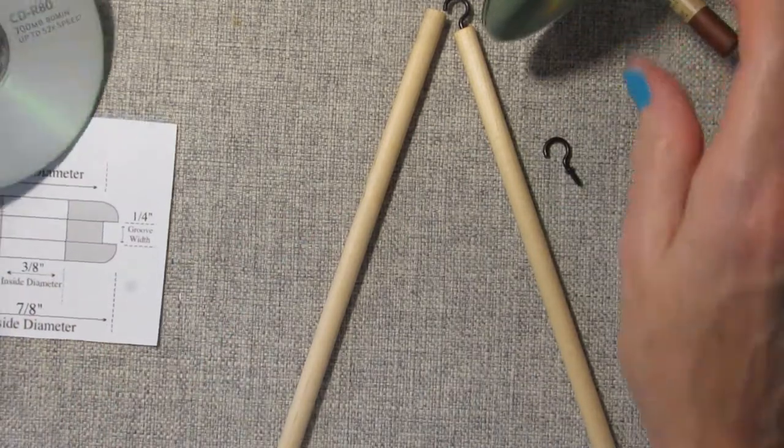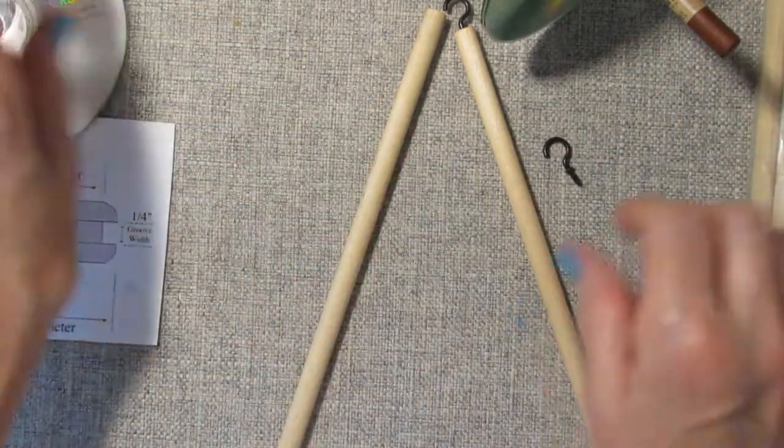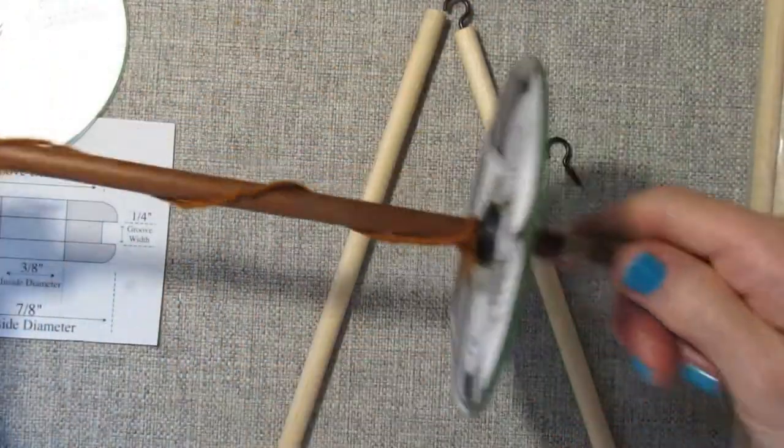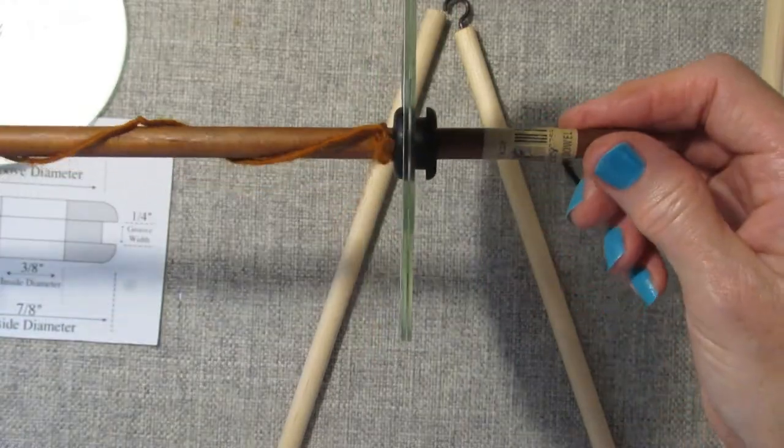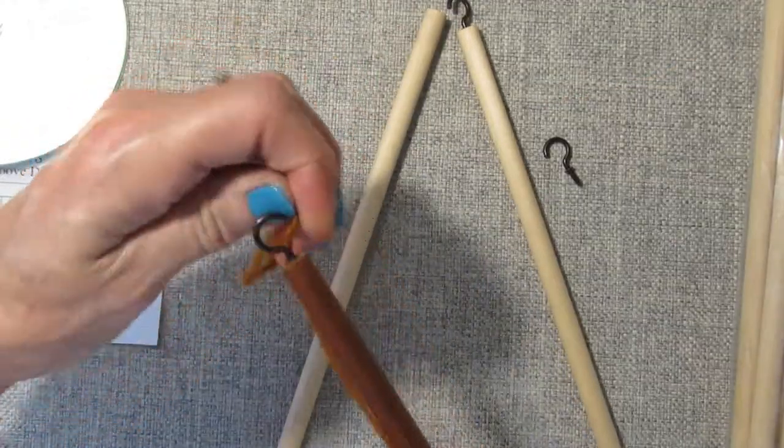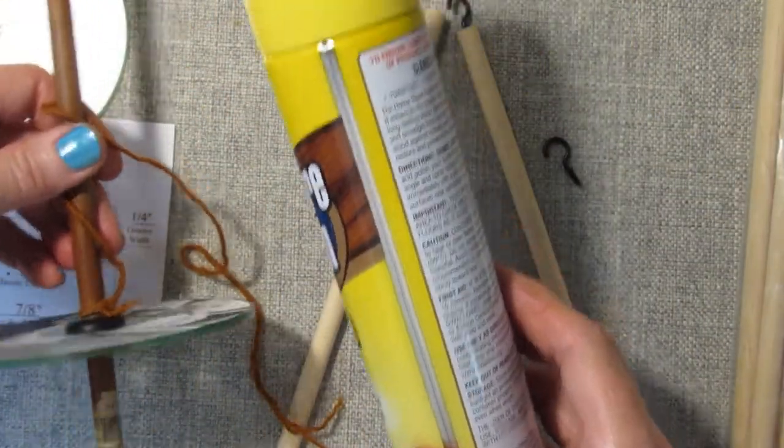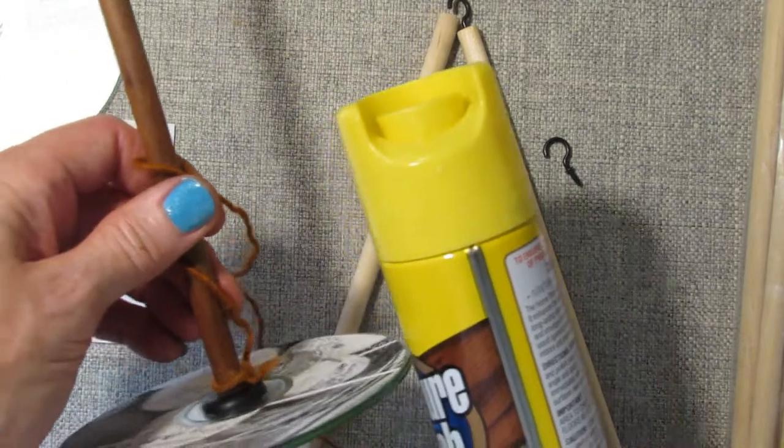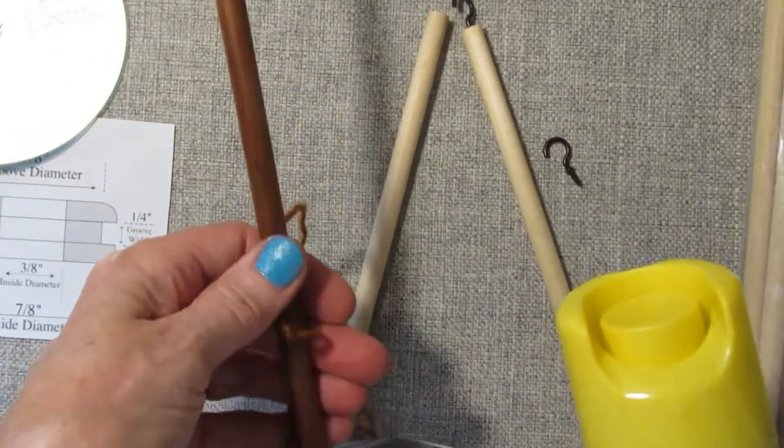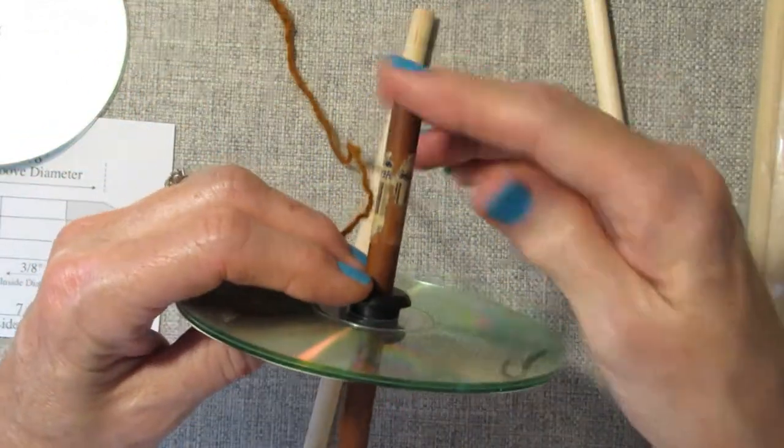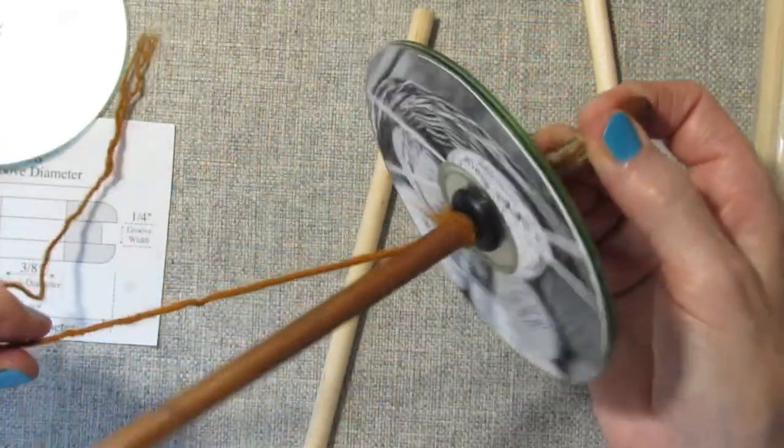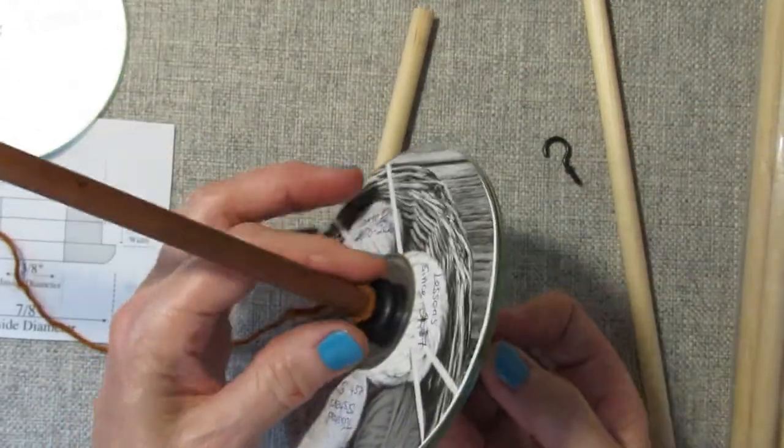Alright, and then you will slide this onto your dowel, like so. And what helps when you're trying to slide it onto the wood—it's going to be a tight fit—so use some furniture polish, and wax your dowel. So you slide it on just a few inches, 2 or 3 inches from the bottom, and you can always adjust that down the road.